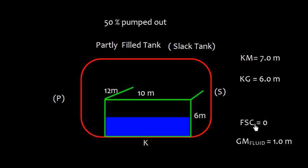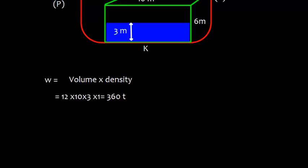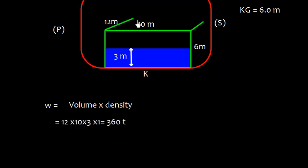The tank is pumped out by 3 meter and the sounding of the tank is now 3 meter. Let us work out how much is the quantity pumped out. The quantity pumped out is volume into density and we have to know the volume which is 12 into 10 into 3 and the density of fresh water we can take 1 which is the relative density of fresh water. The value is 360 ton. Let me just show you here 12 meter length, 10 meter breadth and 3 meter this one.